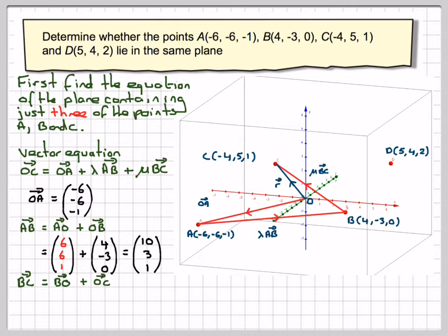BC is the same as going BO plus OC. Against the arrows of this one, so changing the sign: (-4, 3, 0) plus (-4, 5, 1). And then we're going to get from that (-8, 8, 1).